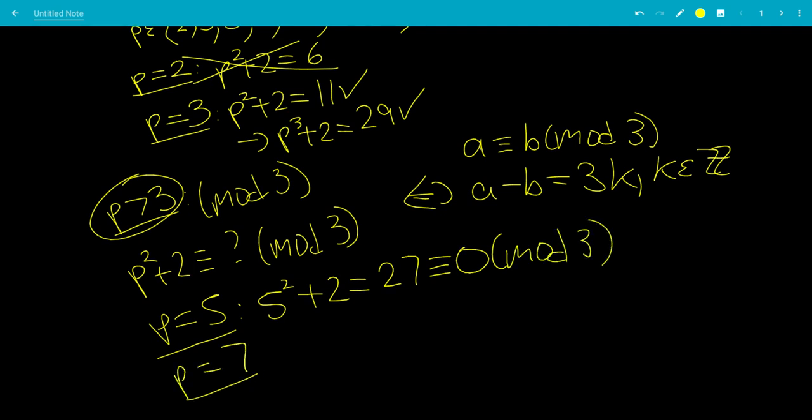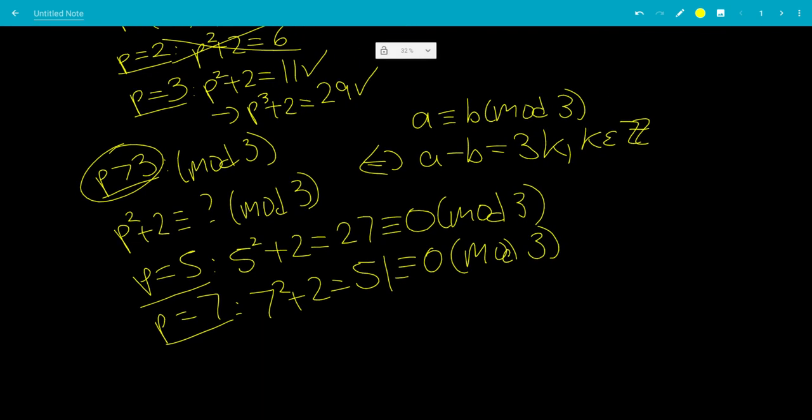p equals 7, we'll get 7 squared plus 2, which is 49 plus 2 is 51, which is 3 times 17. Right, yes. So this would be 0 mod 3, it's a multiple. And you can check for all of them.